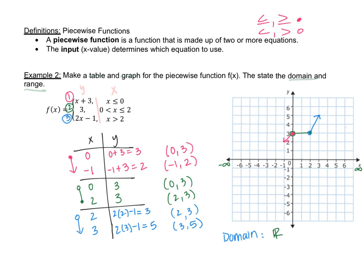For the range, which refers to the y values: the graph is pointing down with an arrow going to negative infinity, and also pointing upward with an arrow going to positive infinity. So the range is also all real numbers. We have our domain and range and our graph completed for this problem.